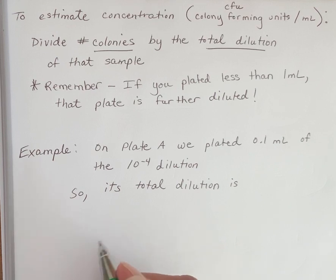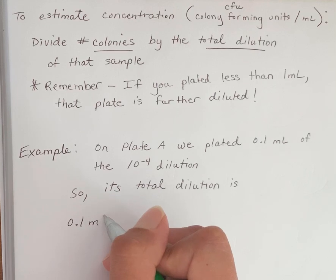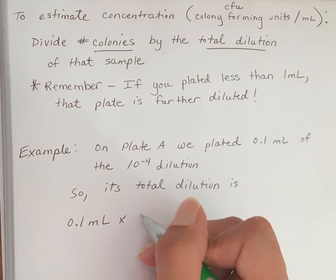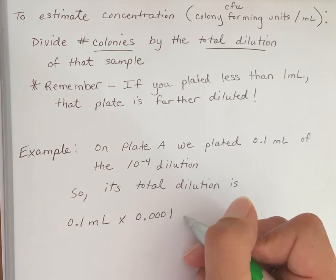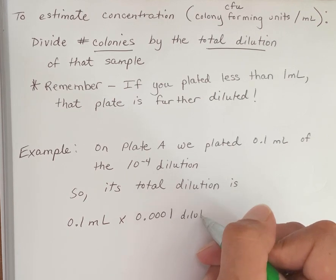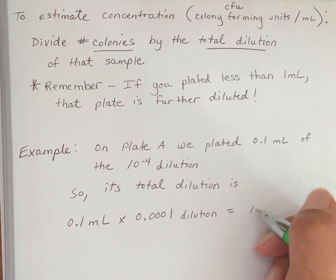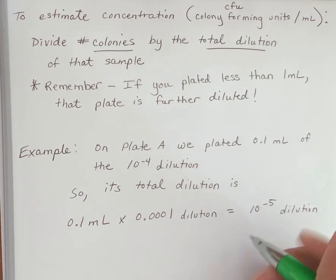So its dilution is 0.1 mL, which is how much you plated, times the dilution of that bottle, which gives you a 10 to the minus 5 dilution. So it's 0.00001.